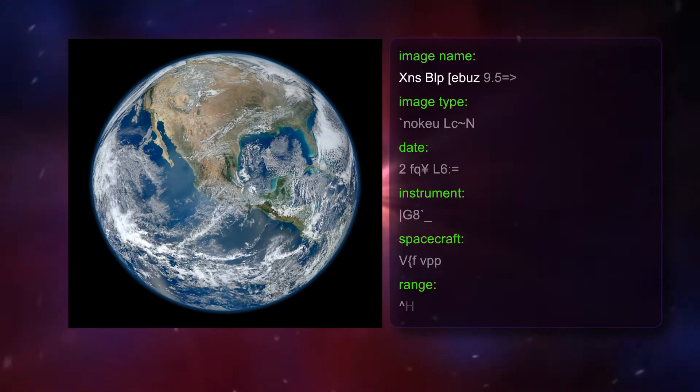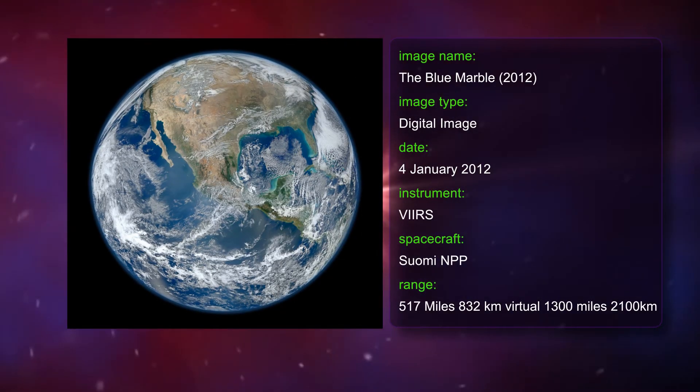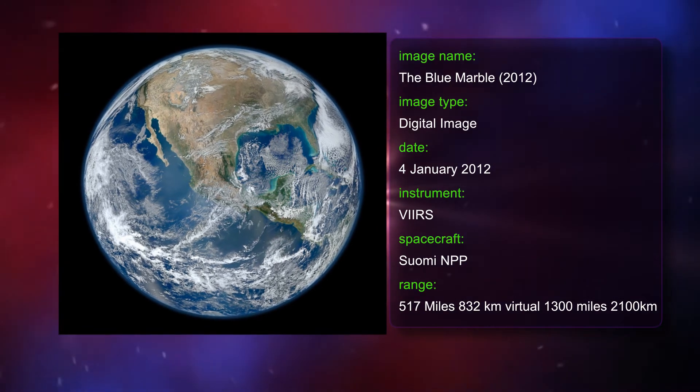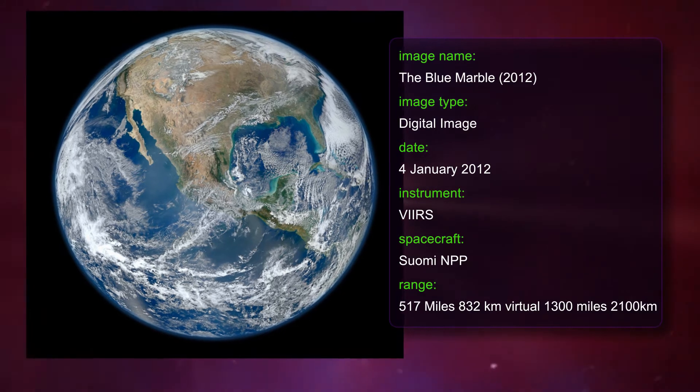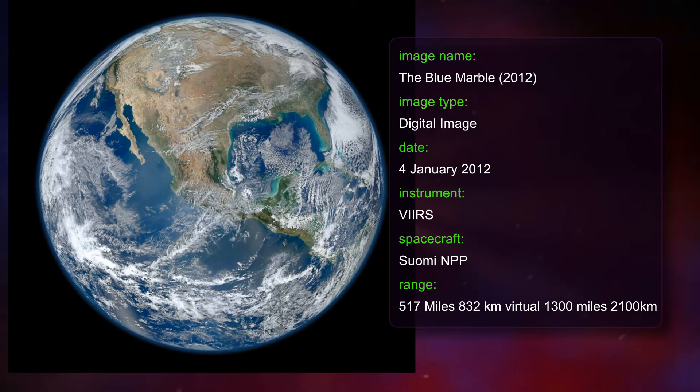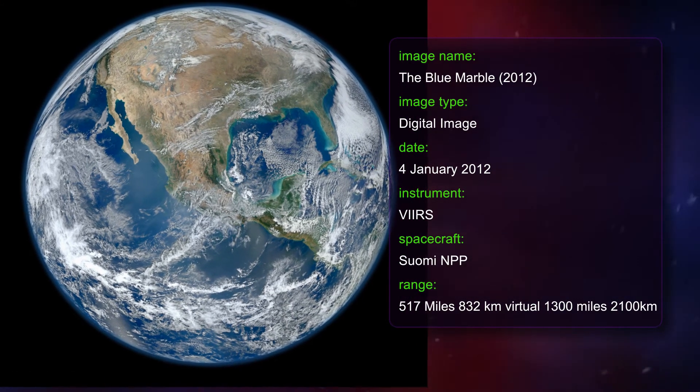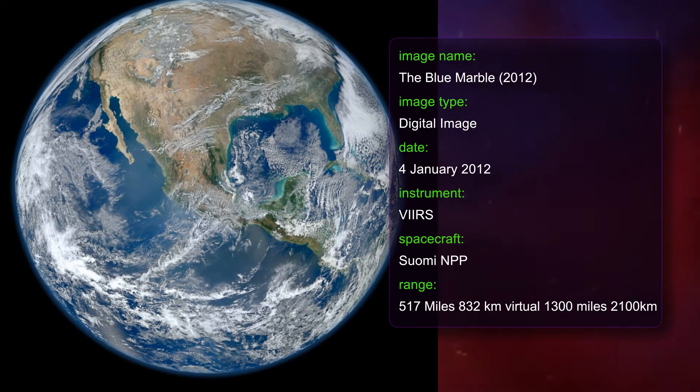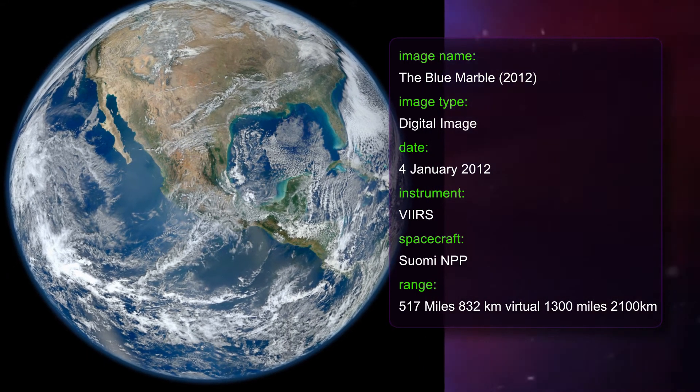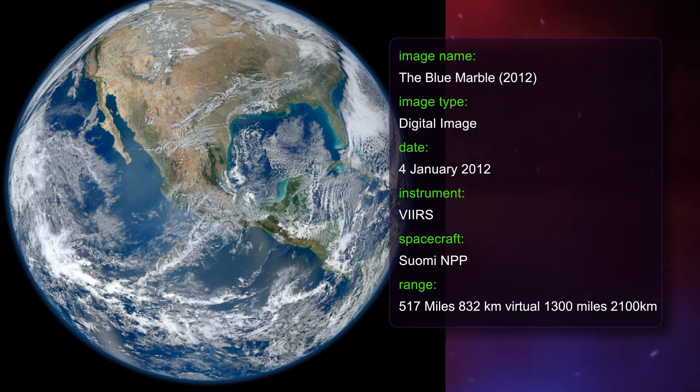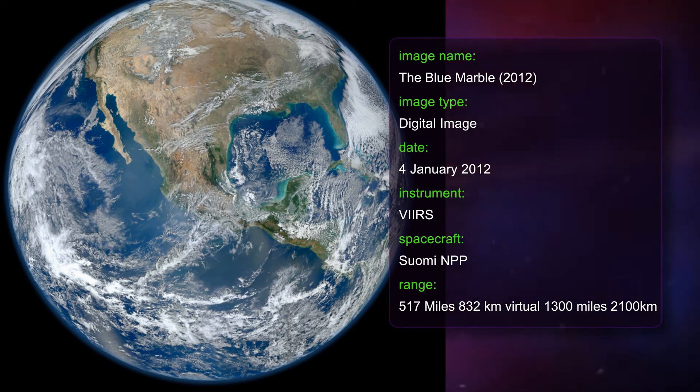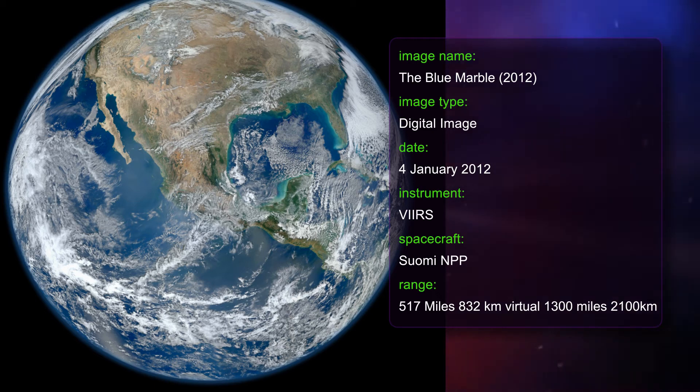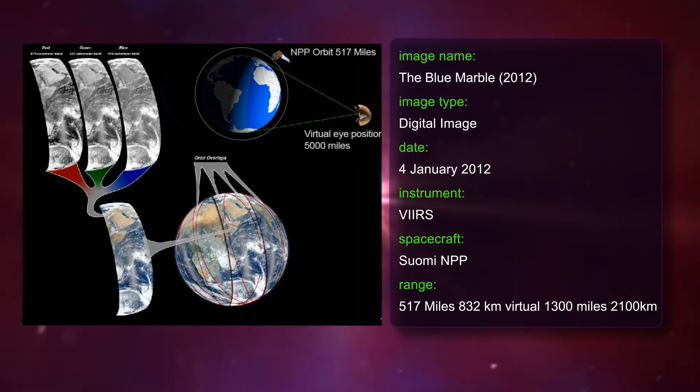The 2012 Blue Marble is the one most people seem to have a problem with because the United States looks so large. This image was originally prepared by NASA oceanographer Norman Kuring for a presentation at a meeting of the American Meteorological Society where the requirement was to show the ocean chlorophyll levels around the USA. The data is from January 4th 2012 and was collected by the Suomi NPP satellite which is in a polar orbit at an altitude of 517 miles.